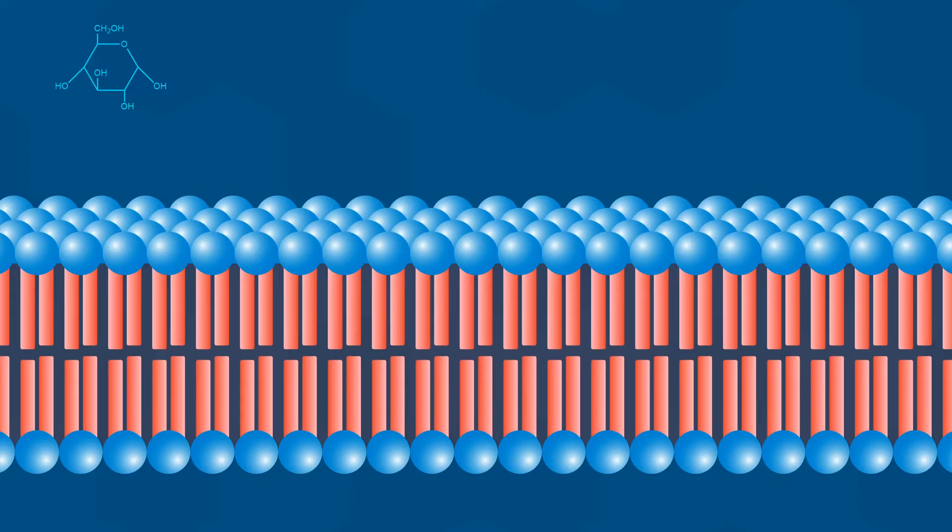As molecules get bigger and more polar, they are generally unable to pass through the cell membrane and are usually blocked, as is the case for the glucose molecules shown here. Another trend that is very important is that ions, such as sodium ions and protons, are unable to pass through the cell membrane at all, and are completely blocked.